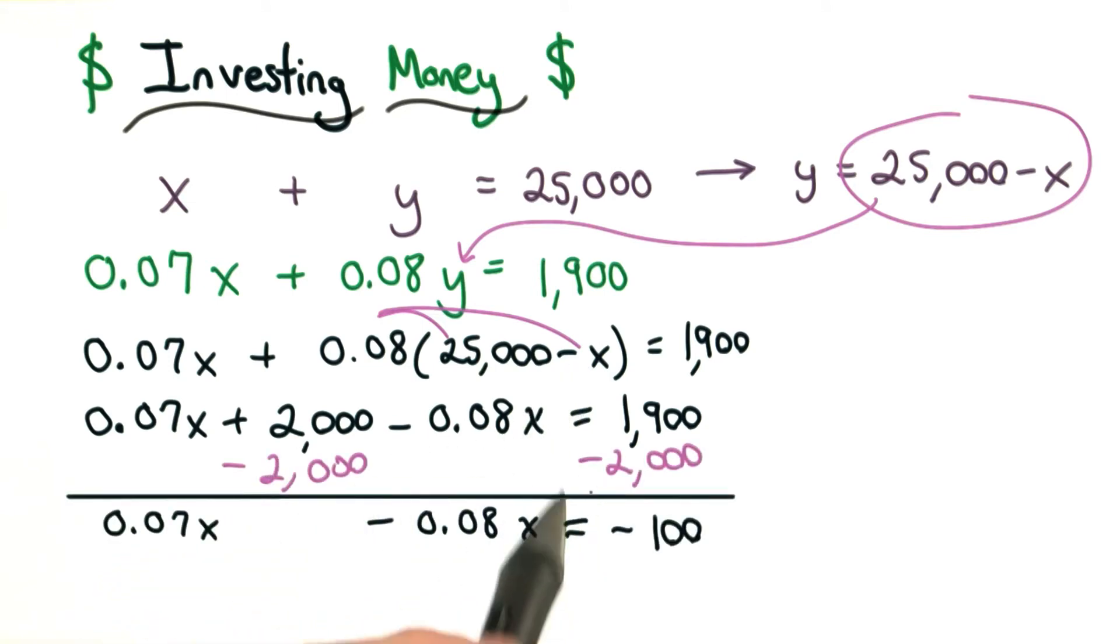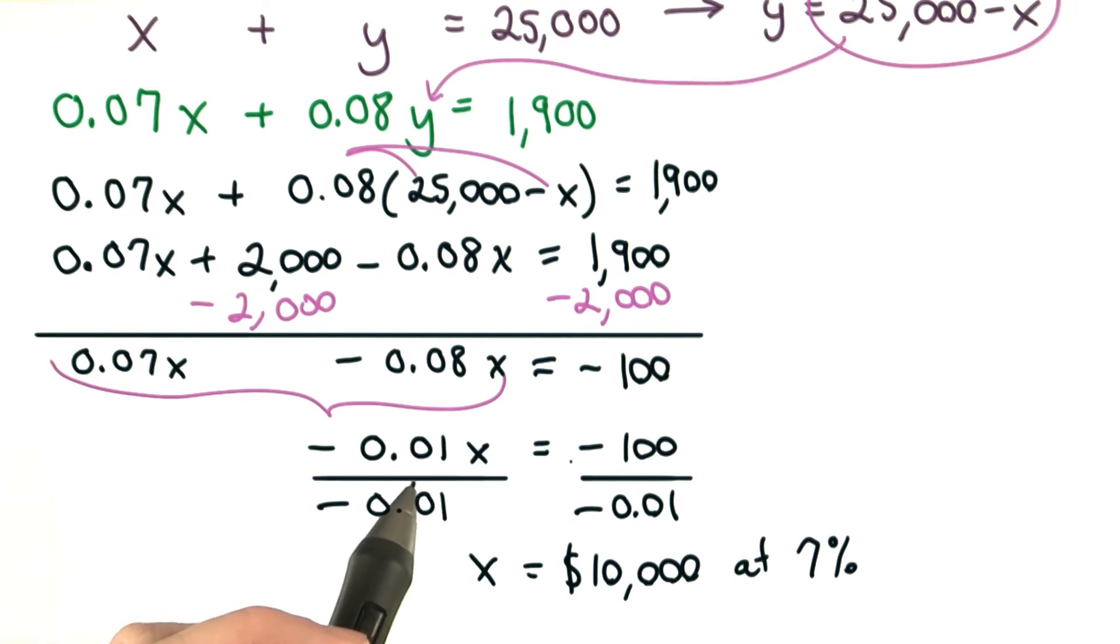I subtract my constant term to move every constant to the right, and then that leaves me with x on the left. I combine my like terms, then I divide by the coefficient of x. I get x equals 10,000, or $10,000,